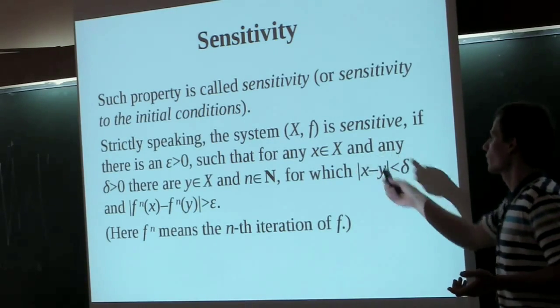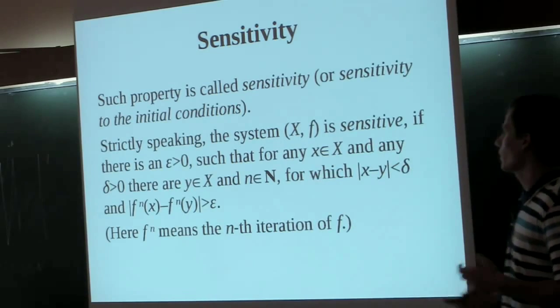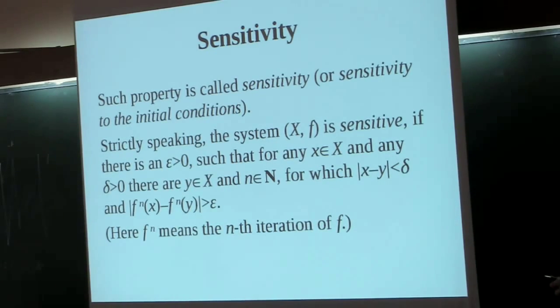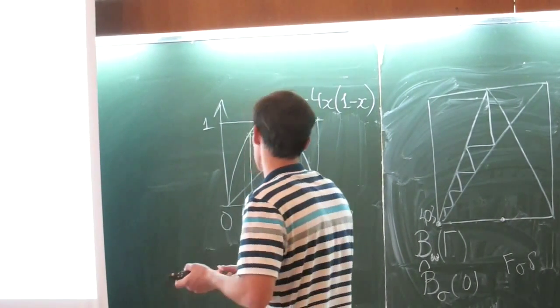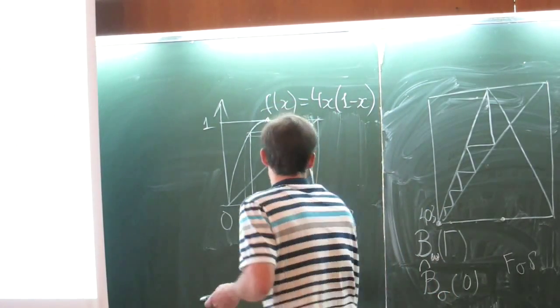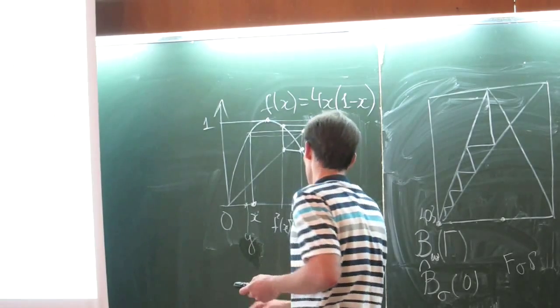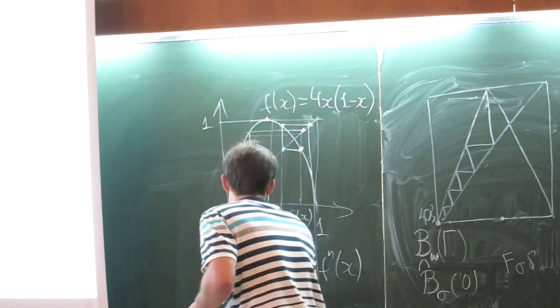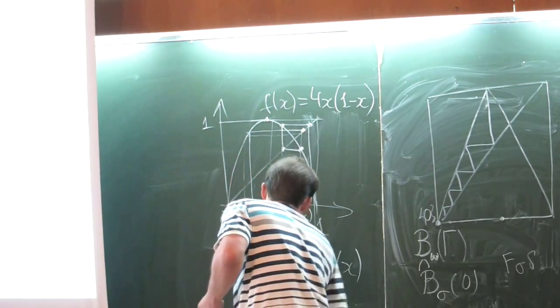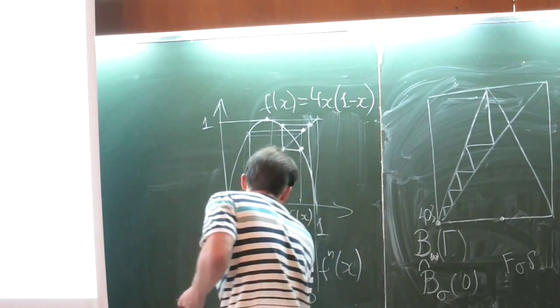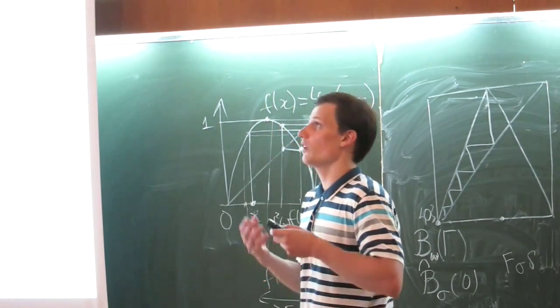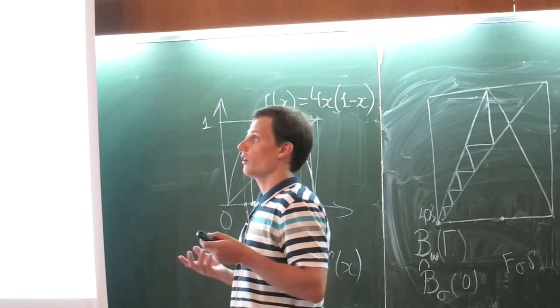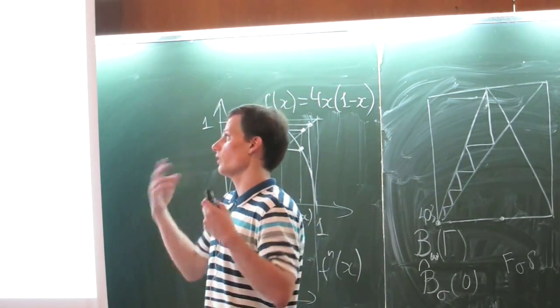If we speak strictly, then the system is sensitive if there is an epsilon which is strictly greater than zero, such that for any point X and any delta, which is greater than zero, there is other point Y, and some number of iterations N, such that F^N of X and F^N of Y stand at a distance which is greater than epsilon. In other words, the two trajectories diverge from each other.